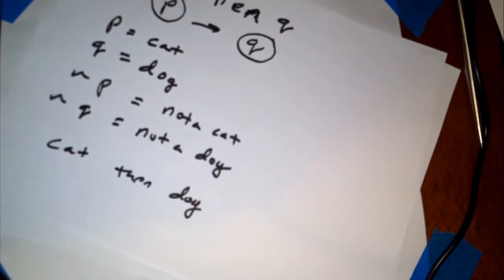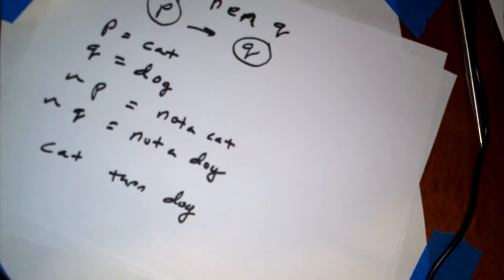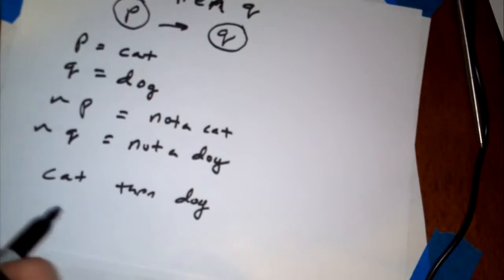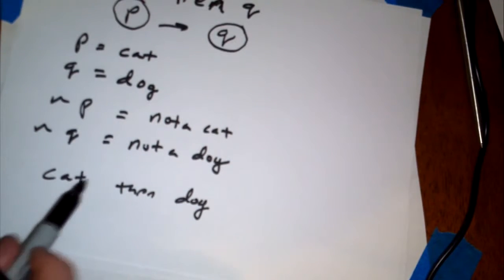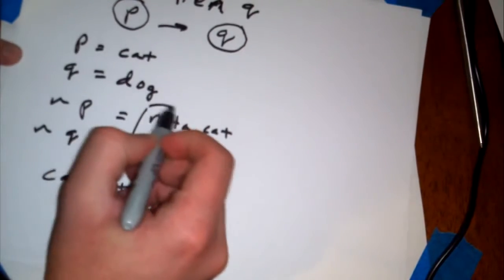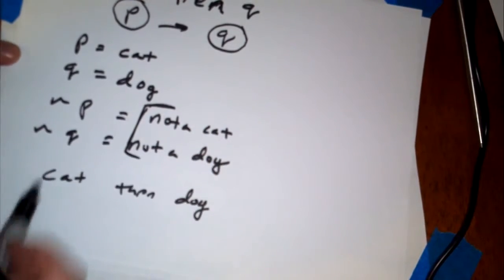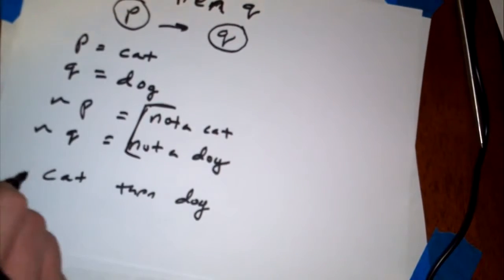So, P then Q means that if the statement is, if P is a cat, then Q is a dog. Some type of statement like that. This is not a very good one. I should really, in the next video, I'll see if I can find some better examples of these types of problems. But, this is a quick overview of what I mean. If these two premises are true, not a dog, not a cat, then cat, then dog, or something like that.